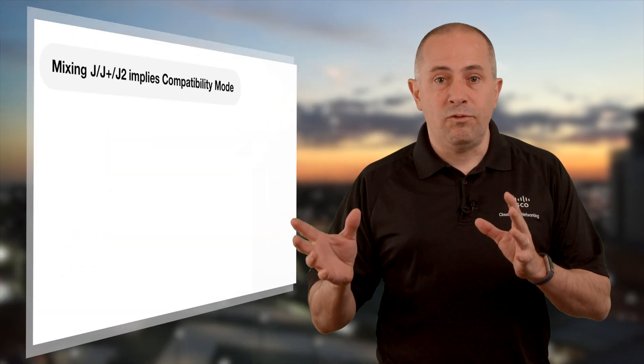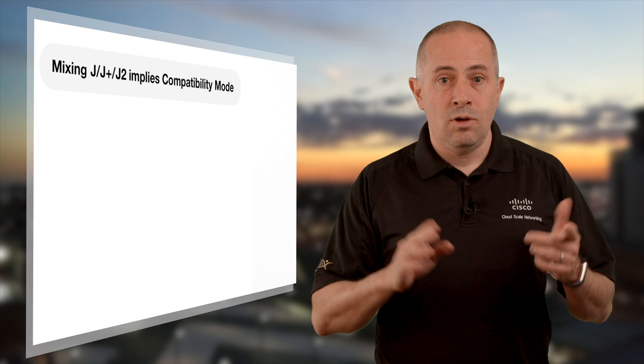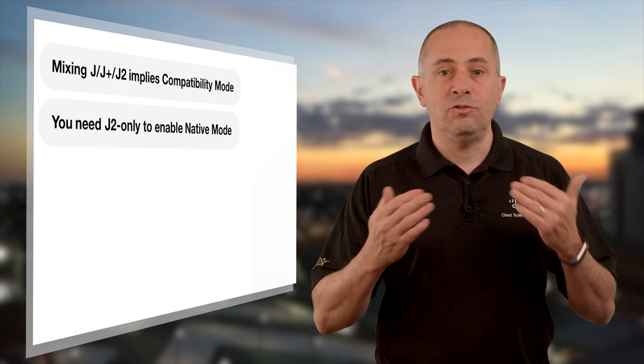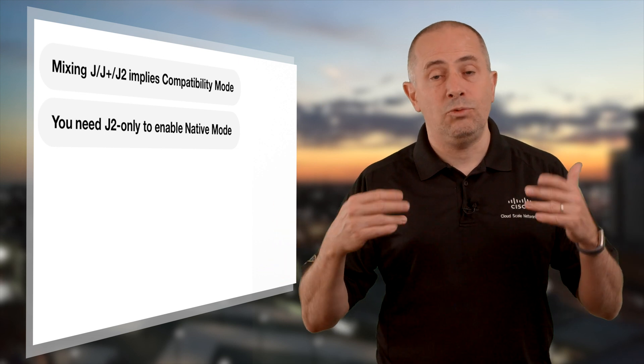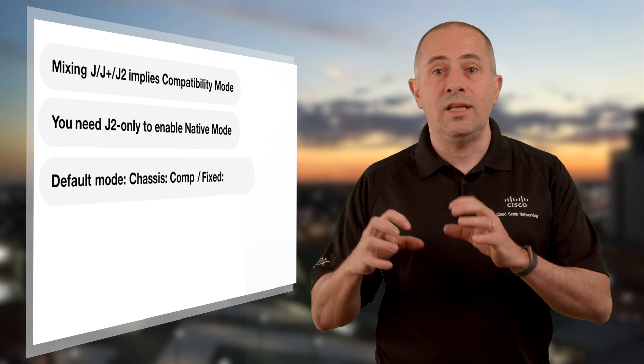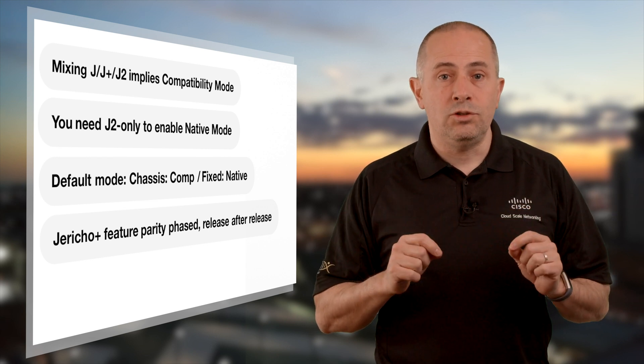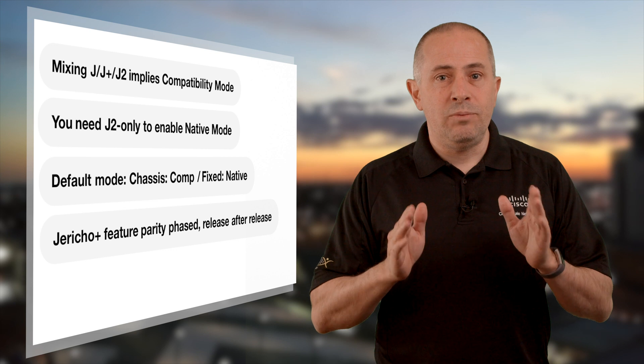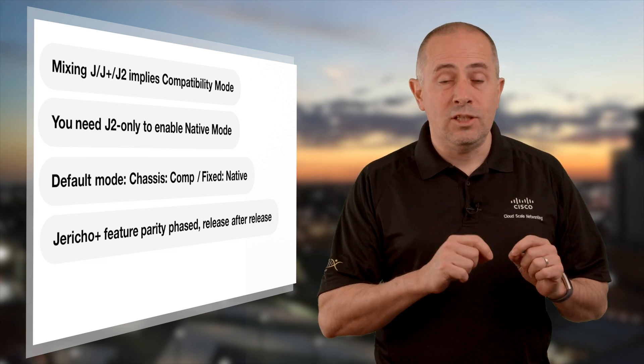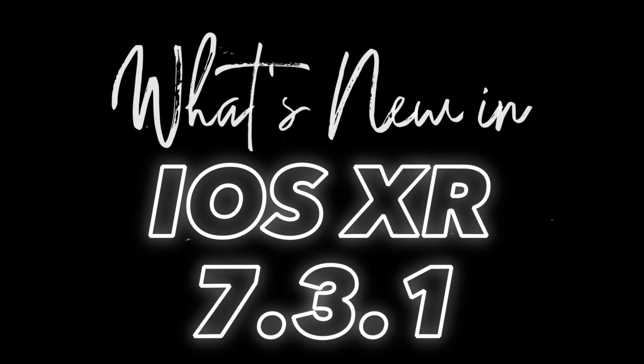Some key takeaways before we wrap up: chassis with a mix of different generations of line cards need to use the compatibility mode. When you have only Jericho 2 line cards you can enable native mode and activate specific features — that requires a reload. Fixed systems powered by Jericho 2 run native mode by default. Depending on the software release and operation mode, not all features will be supported day one, so my best advice is to contact and discuss with your account teams about the services you need to activate and make sure there are no gaps. In the next videos we'll refresh memory utilization and present all new features and products introduced in IOS XR 7.3.1. See you in the next one!